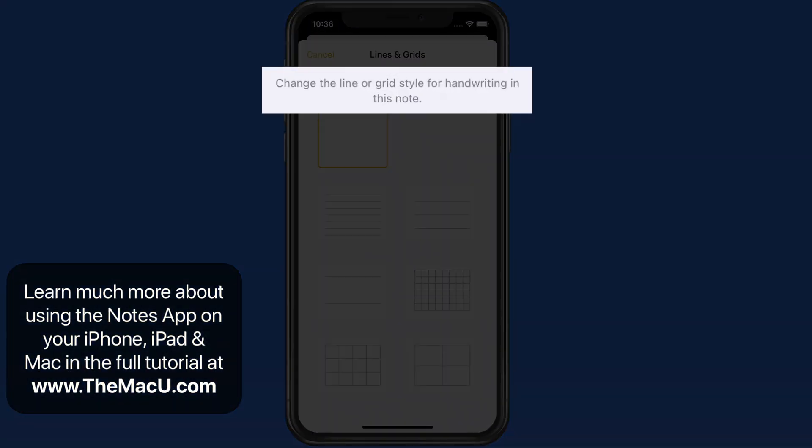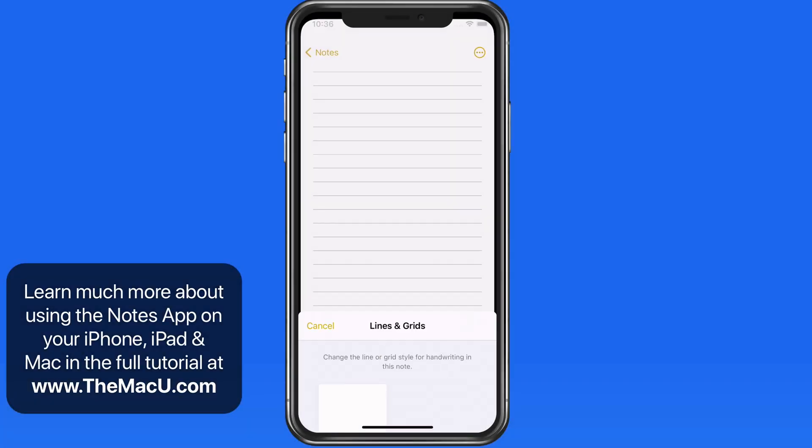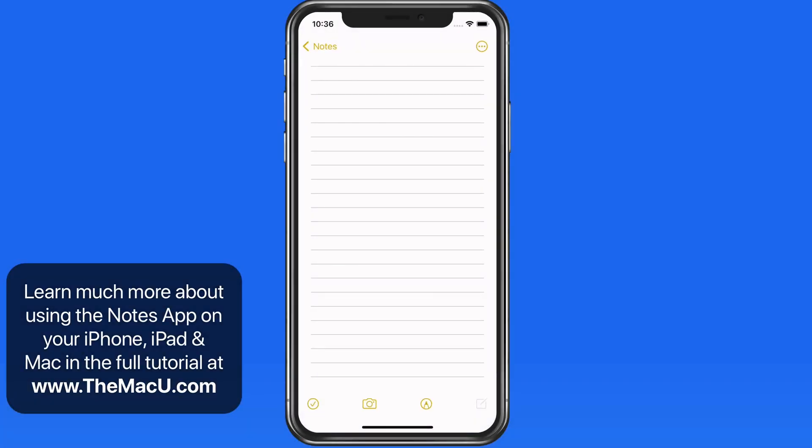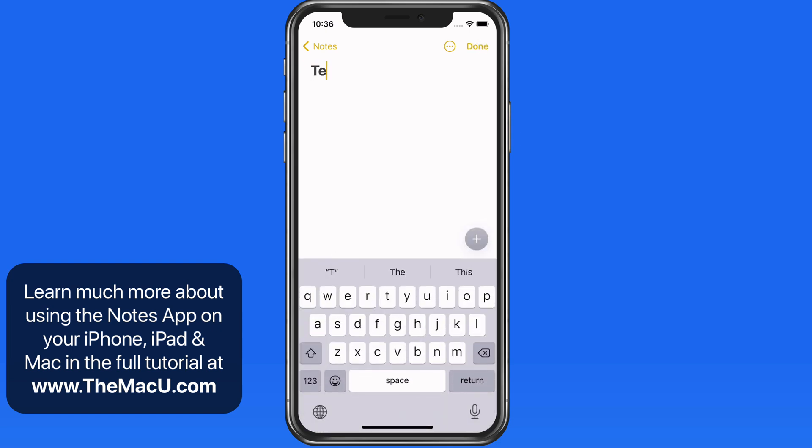Notice that these are specifically for handwriting in your note. So if I add a set of lines, then tap inside the note to add some typed text, that text will only appear above the set of lines.